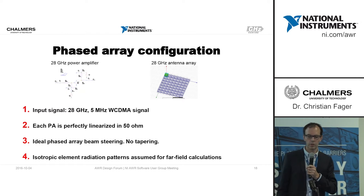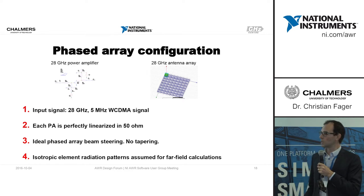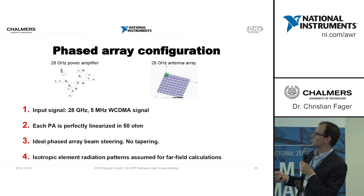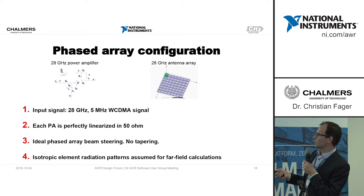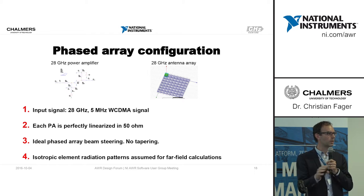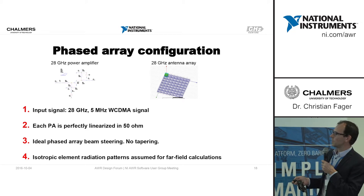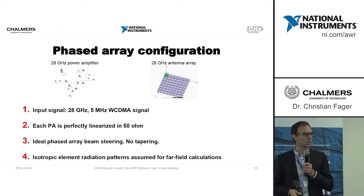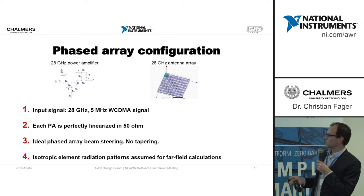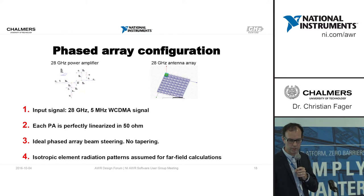The phased array configuration connects these models with the antenna. I feed in a narrowband 5 MHz signal, and I assume each PA is linearized in 50 ohm — so I'm not interested in the nonlinear effects of each branch individually, but in the added nonlinear effects of the phased array. I use ideal phased array beam steering without tapering, and for far-field cases I assume isotropic radiation patterns, which could be replaced with real patterns.